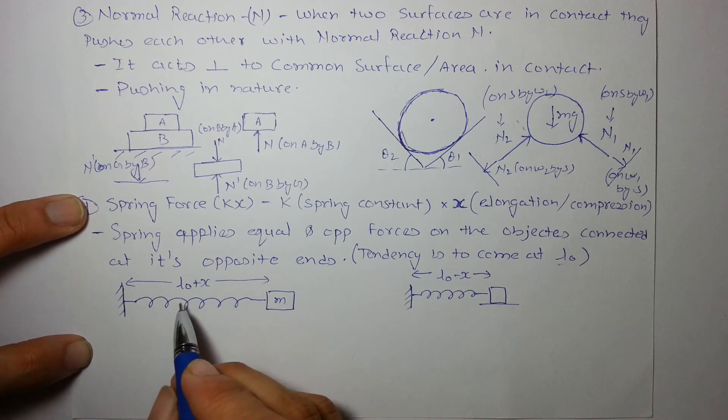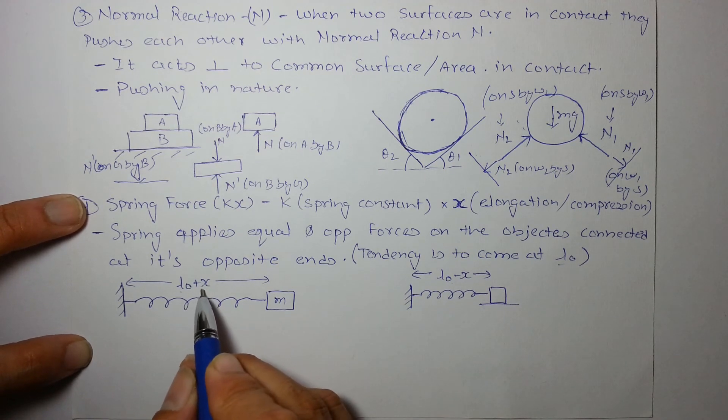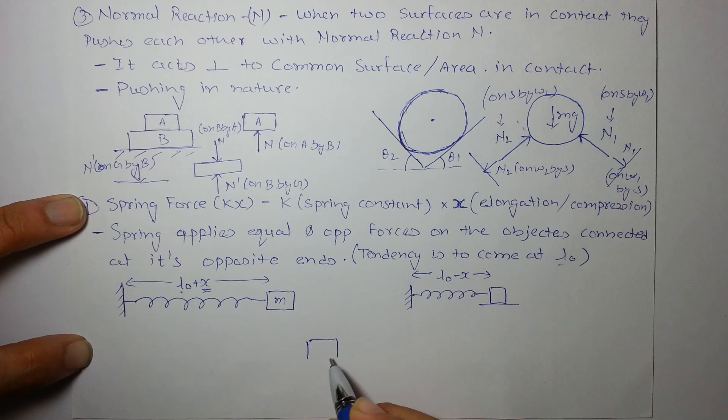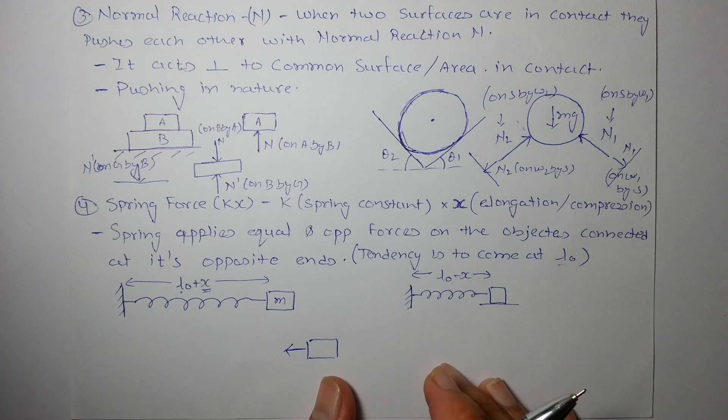So let's say it is stretched by a distance X. So the final length is L0 plus X. Now the force on this block by spring, because spring wants to contract to its natural length, so it will apply a pulling force which is KX on the block.